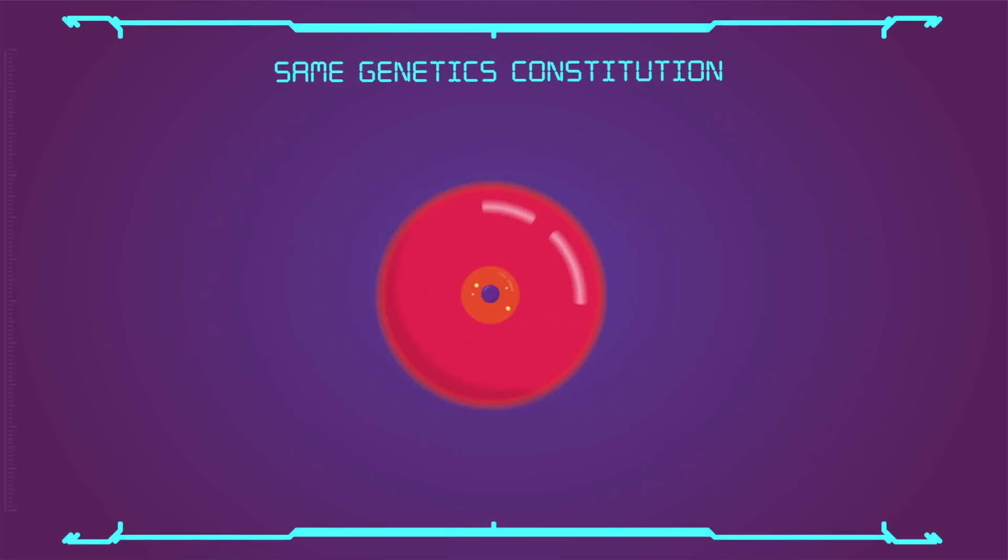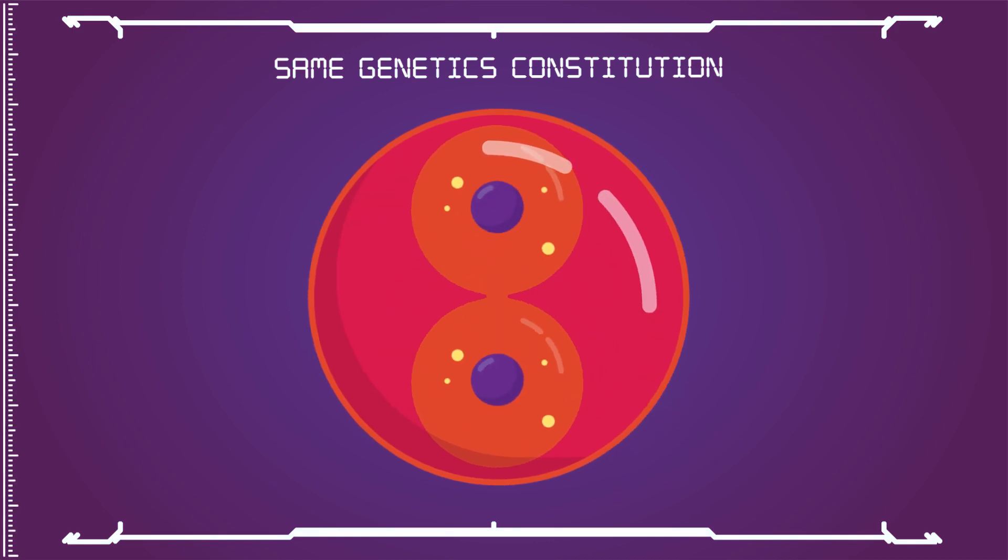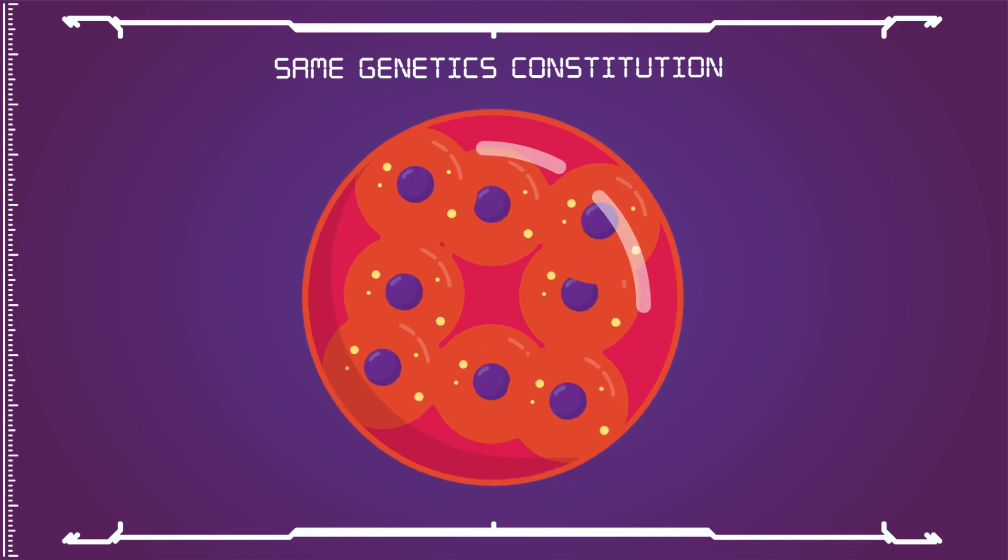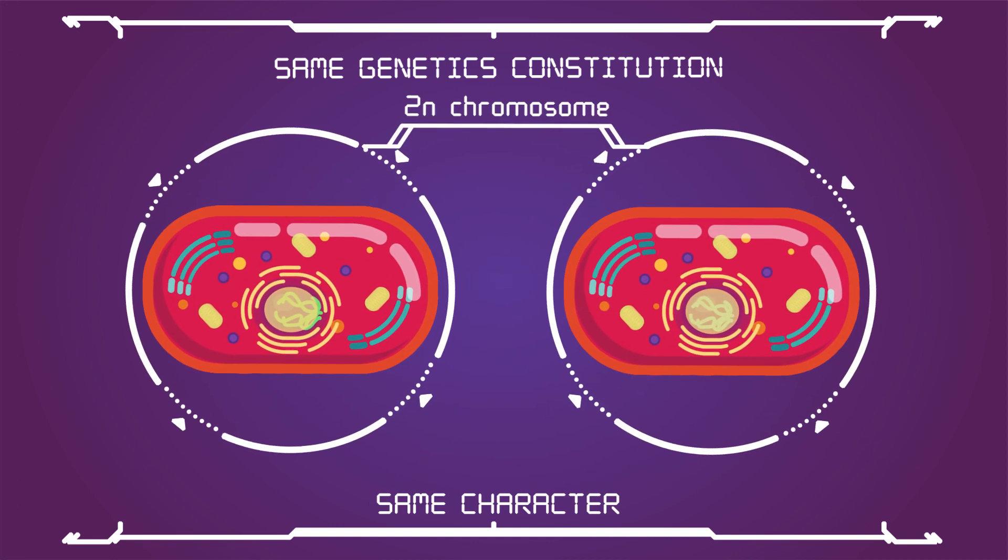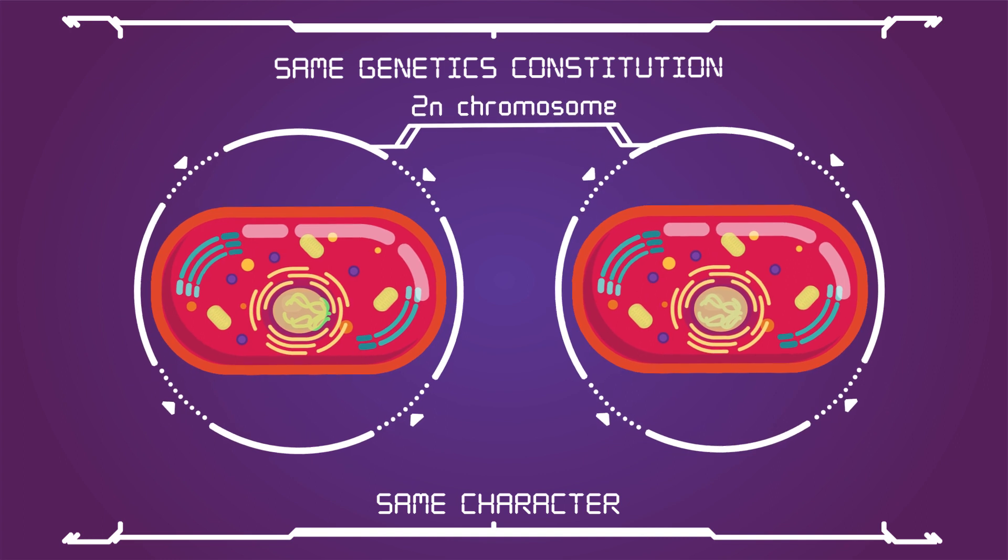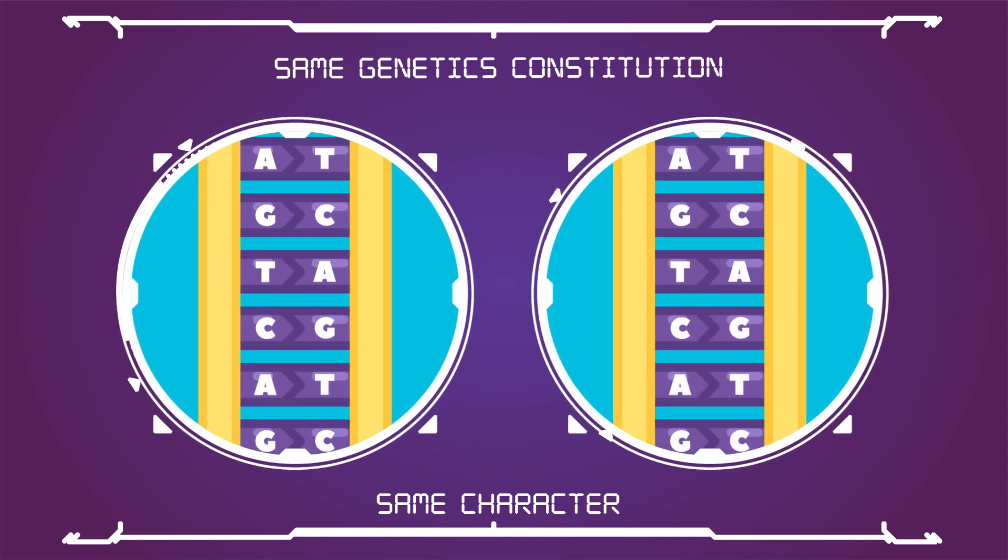It is responsible for growth and development of multicellular organisms from a single-celled zygote. The number of chromosomes remains the same in all cells produced by this division. Thus the daughter cells retain the same character as those of the parent cell. It helps the cell in maintaining proper size.